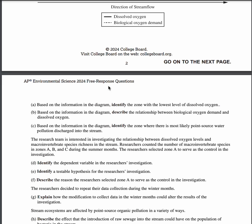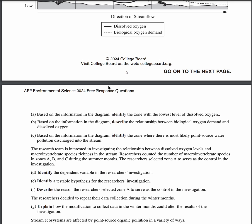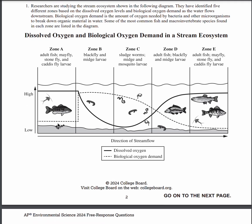For part D, the dependent variable is the number of macroinvertebrates. For part E, a statistical hypothesis would be that the lower the DO, the lower the macroinvertebrate species richness. For part F, they selected zone A because it was upstream from where the pollution is introduced. The dissolved oxygen and biological oxygen demand at zone A are constant, making it easier for researchers to measure and study.